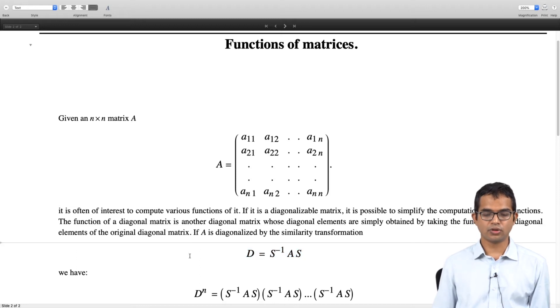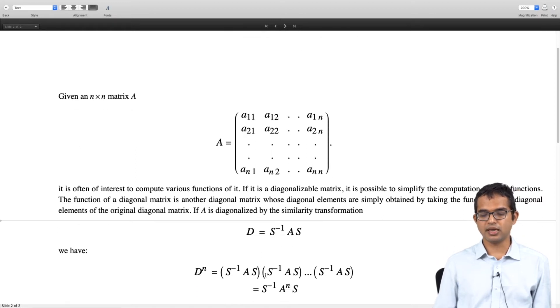Then if you want to take the nth power of A, you just take the nth power of D, which is much easier to do because it is just taking the powers of the eigenvalues. D to the n is S inverse A S times S inverse A S all the way up to S inverse A S n times. Then you see that S and S inverse collapse with each other and you get identities everywhere. So then you have A times A times A all the way up to the nth A and you have an S, which is S inverse A to the n S.